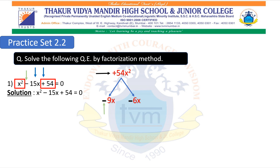Let us begin with the solution. First line: x squared minus 15x plus 54 equals to 0. The linear term minus 15x will be substituted by minus 9x and minus 6x. Therefore, x squared minus 9x minus 6x plus 54 equals to 0. The 3 terms have now been split into 4 terms. Looking at the first and second terms, x squared minus 9x — the common is x. We take x outside and write the uncommon values in a bracket. For the third and fourth terms, minus 6x plus 54, the common is minus 6. This gives: x into x minus 9, minus 6 into x minus 9 equals to 0.